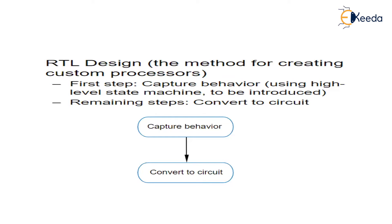The topmost level is the register transfer level. It is used for designing processors. A processor, as we saw in our previous video, is a data path and controller combined together. Designing processors involves circuits whose building blocks are registers and other data path components, and involves transferring the data from a register through other data path components — like adders — and back again to the register. Such a design is called register transfer level design, or RTL design.